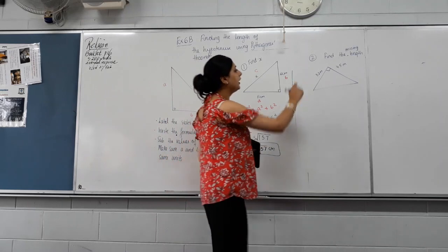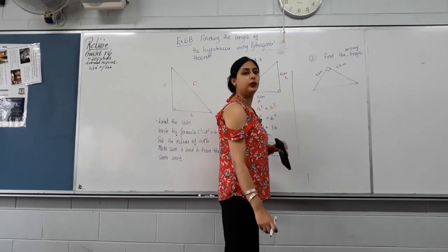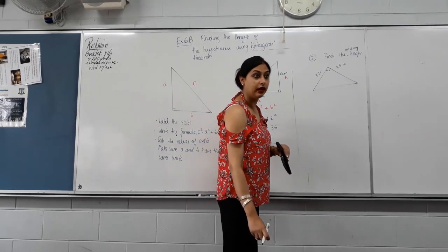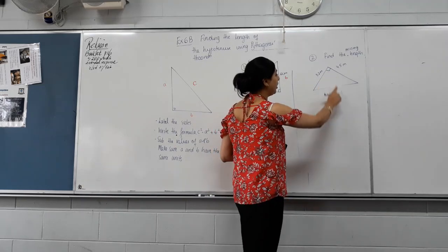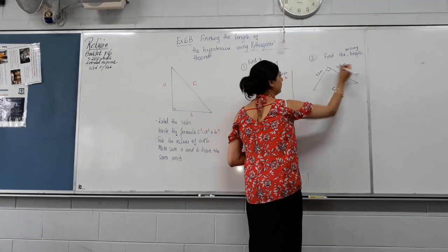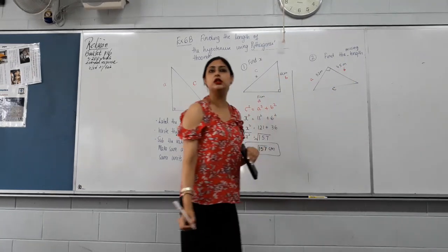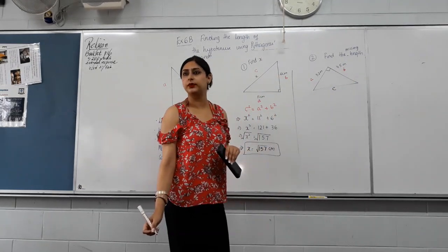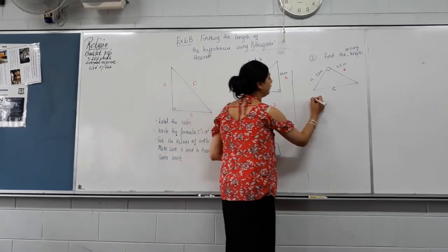Same thing. Finding the missing length. The first side that we label is the hypotenuse C, opposite to the right angle. Is this C? So A and B can be anything? Checking the units for A and B. Do they have the same units? Yes. Let's write the formula.